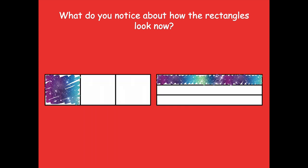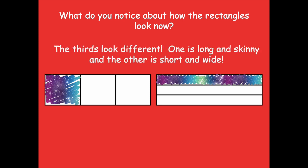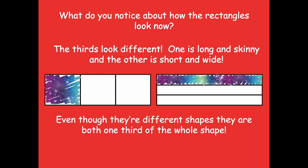Let's talk about it. What do we notice about how they look now? Well, the thirds look different, right? One is long and skinny and the other is short and wide. But even though they're different shapes, they're both one third of the whole shape. They have two parts unshaded — the prefix 'un' means 'not,' so not shaded. One part for each shape is shaded and two parts are unshaded.